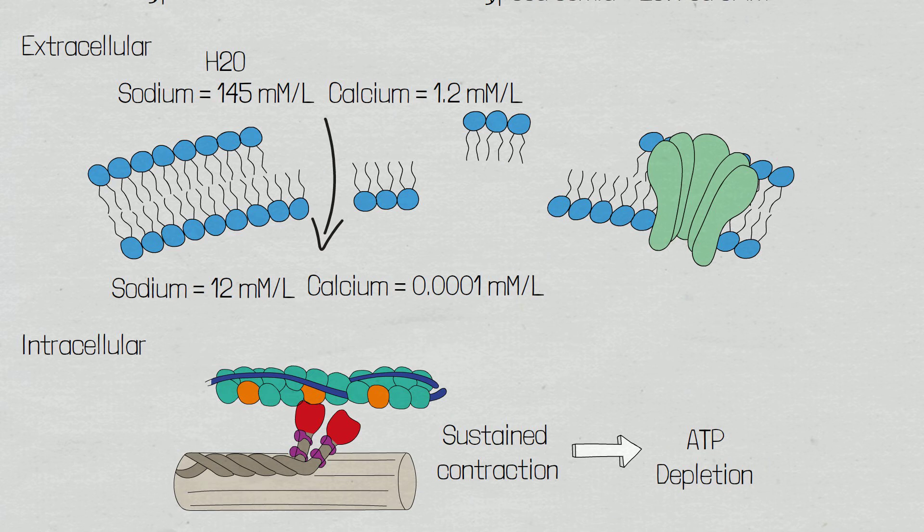This elevation in calcium activates calcium-dependent proteases — enzymes that break down protein — which damages the cytoskeleton of the cell, promoting rupture of the cellular membrane and further damage to the ion channels.